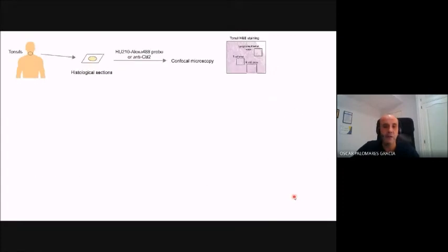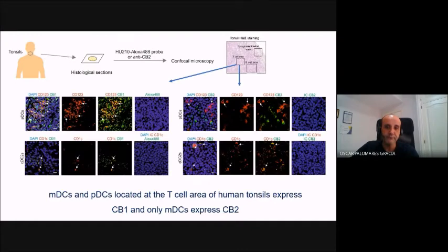Next, we wanted to study the expression of these receptors at the protein level in the tonsil tissues, and for that we performed immunohistochemistry experiments followed by confocal microscopy technology. Here you can clearly see that both plasmacytoid dendritic cells but also type 2 conventional dendritic cells express CB1, here in green, in the T-cell areas of human tonsils.